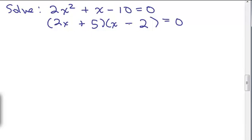So after factoring, what do we do next? We take each factor and set it equal to 0. And then we solve for x from here. So first we add or subtract the number from both sides.